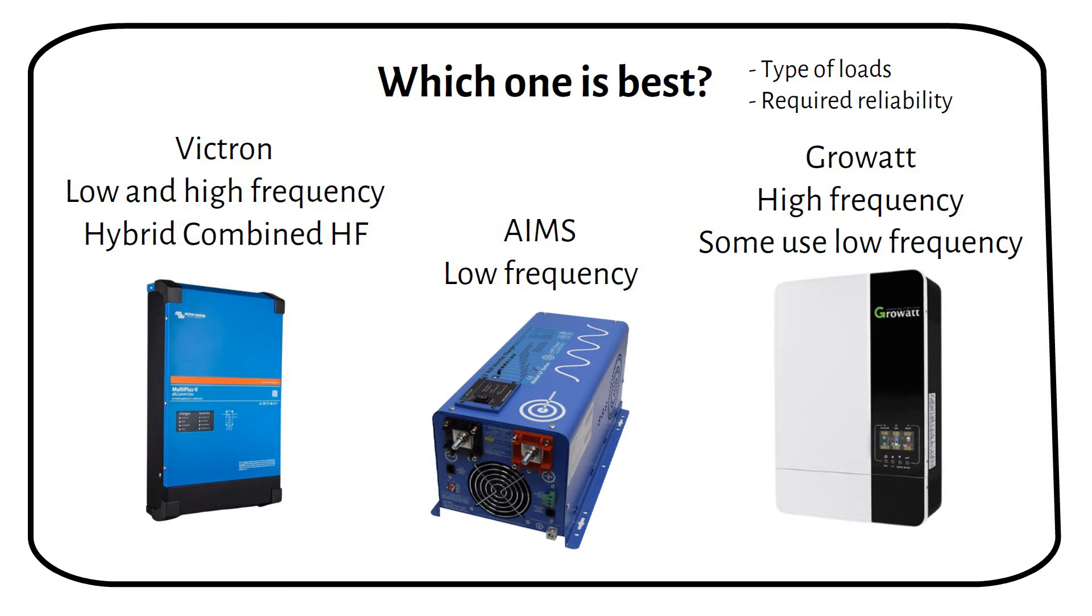If you don't know if it's a low or high frequency inverter, look at the weight. This will make it clear. For example, a 3kW high frequency inverter weighs 13 pounds, or 6 kilograms. While a 3kW low frequency inverter weighs 42 pounds, or 19 kilograms, about 3 times more.